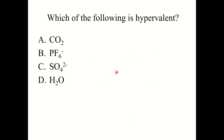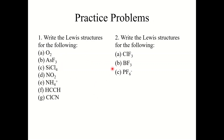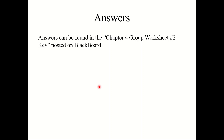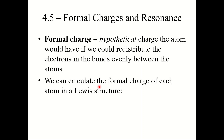Quick knowledge check: which of the following is hypervalent? The correct answer is B, PF₆⁻ — the other three are not hypervalent. Here are a few practice problems for you to try; the answers can be found on the chapter four group worksheet number two key, which is posted on Blackboard. That concludes this section — I'll see you in the next video for section 4.5, Formal Charges and Resonance.